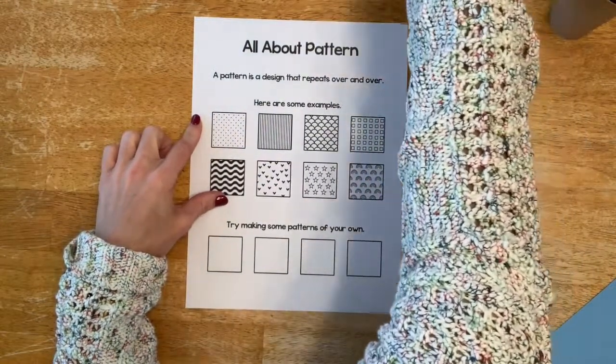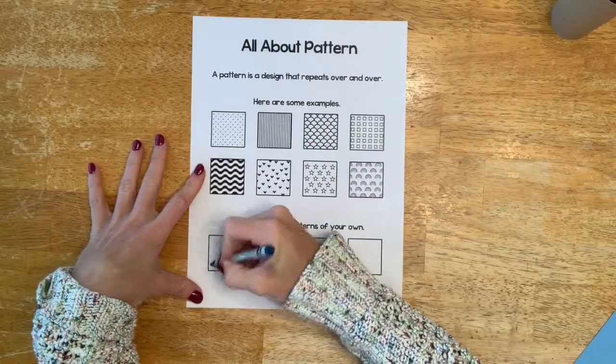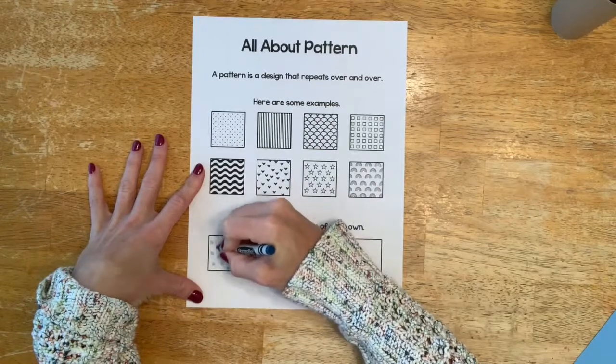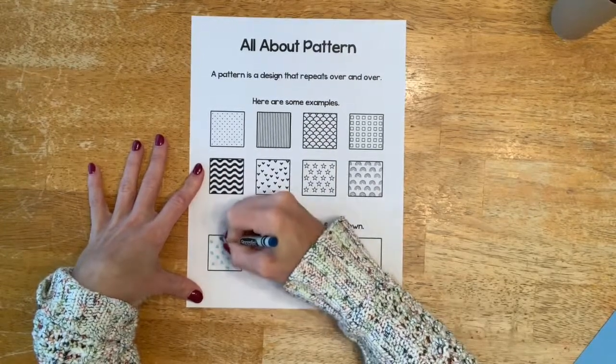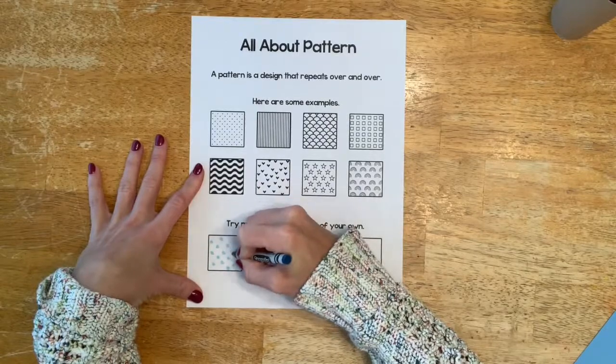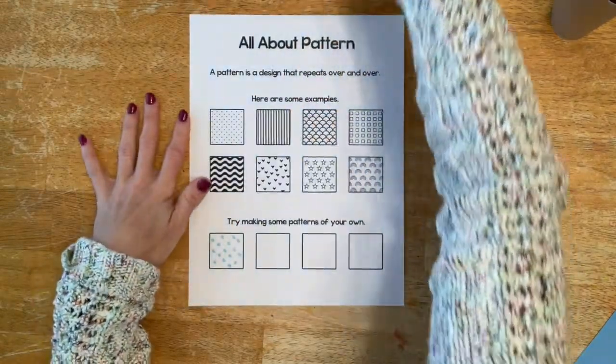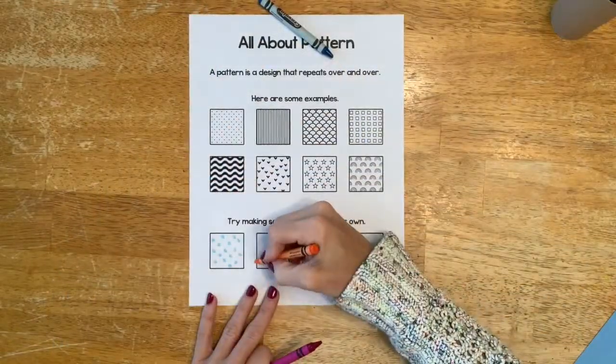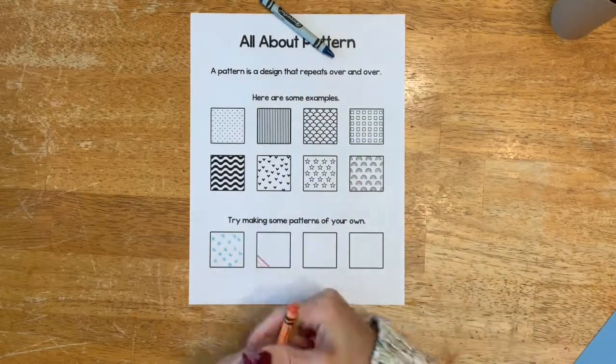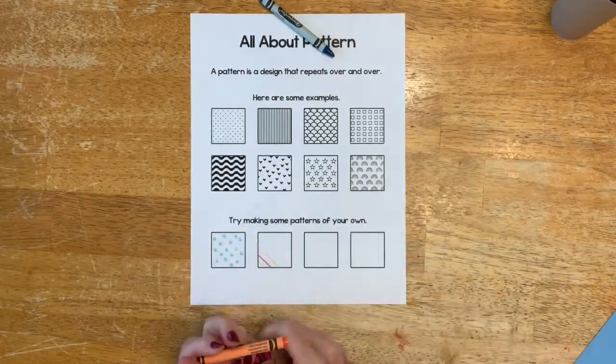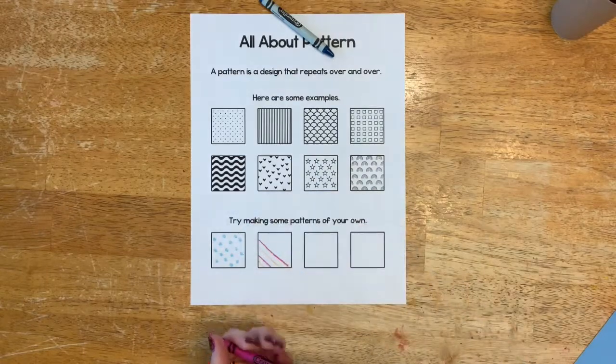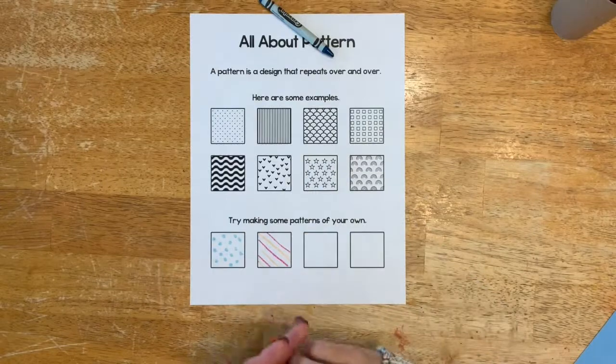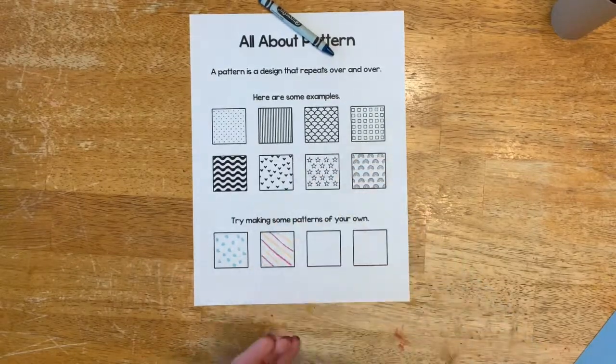These are some examples of patterns, and then here they'll make some patterns of their own. They'll have their crayons and can practice filling in the boxes with their own patterns. You can show them they can make polka dots, and they may need a little help getting going but they should get it pretty quickly. You can also let them know they can use colors, so their patterns could be more similar to what they've learned in class, like an AB pattern.